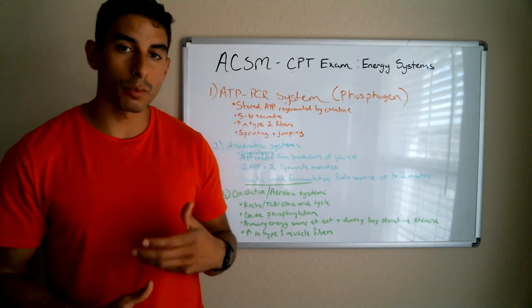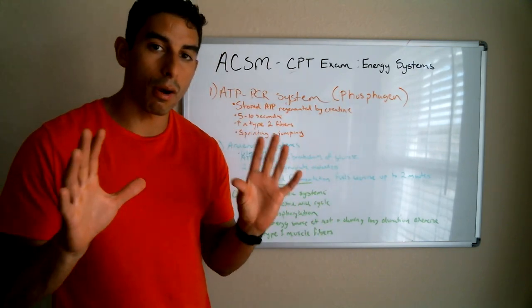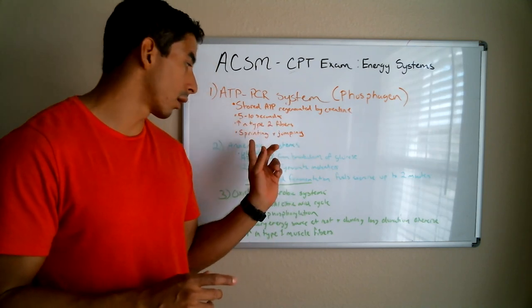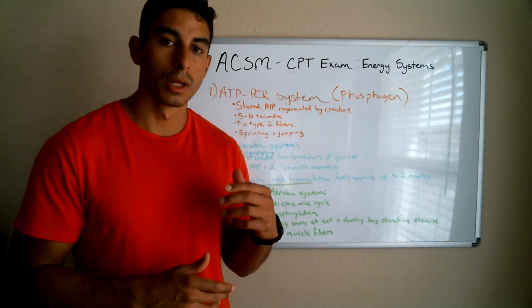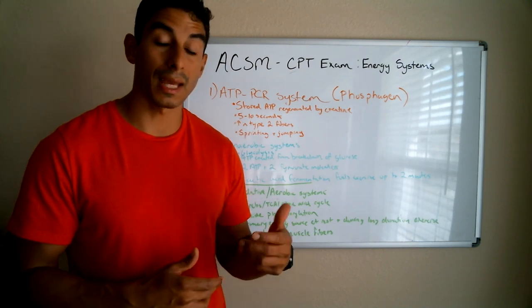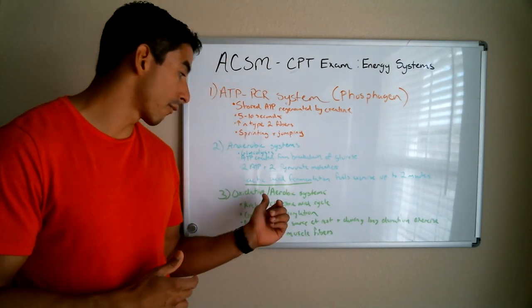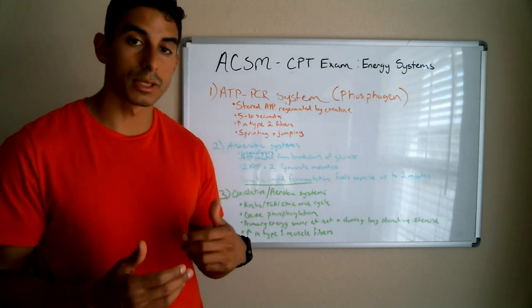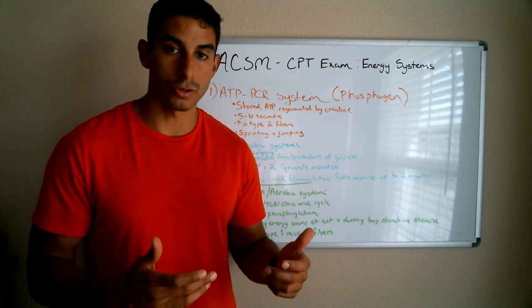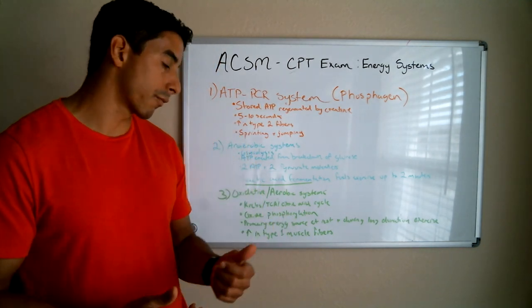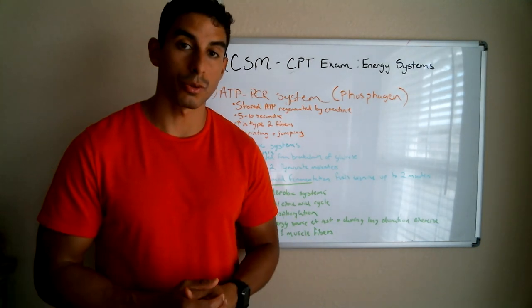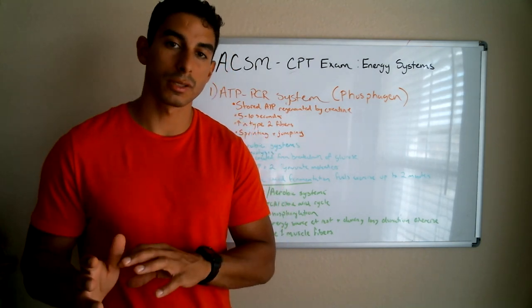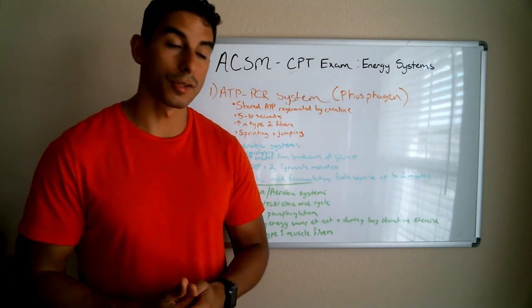There are three primary energy systems. We have the ATP-PCR system, we have the anaerobic system — which includes glycolysis and lactic acid fermentation — and then we have the oxidative aerobic systems, which include the Krebs cycle (also called the TCA or citric acid cycle) and oxidative phosphorylation, which happens in the mitochondria. We'll cover these quickly and explain how they're relevant to different activities.